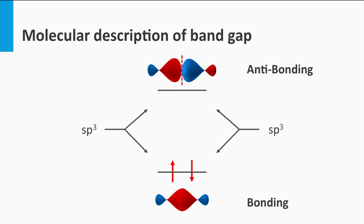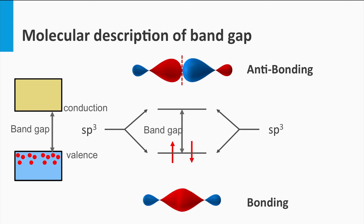This is demonstrated in the animation. Let's consider the example of silicon again. For silicon, the far majority of electrons will fill up the lowest bonding state. These lower bonding states reflect the valence band as introduced earlier. The anti-bonding states correspond to the conduction band and are hardly occupied by any electrons. The gap between the bonding and anti-bonding states corresponds to the band gap.